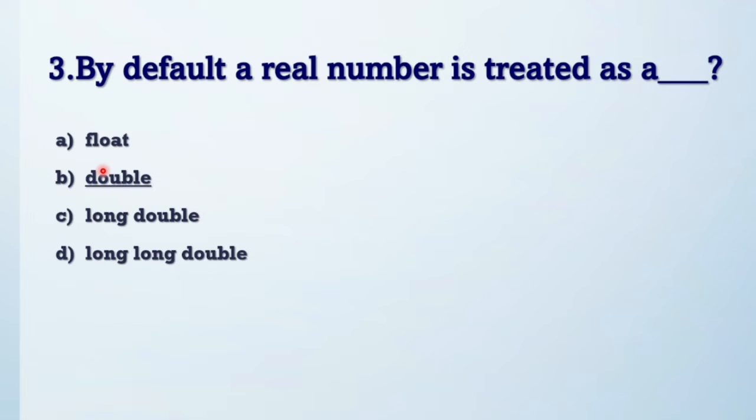So answer would be double. Why double? If I give example: float f = 3.6f and float f = 3.6. Here explicitly you put f, so it will take by default float data type. If you don't put f here, 3.6 is treated as a double. Okay, so don't forget this point.